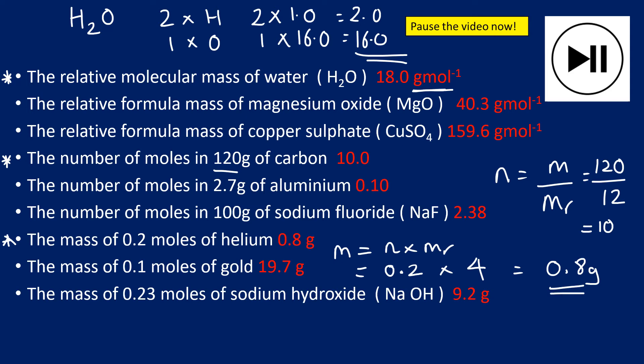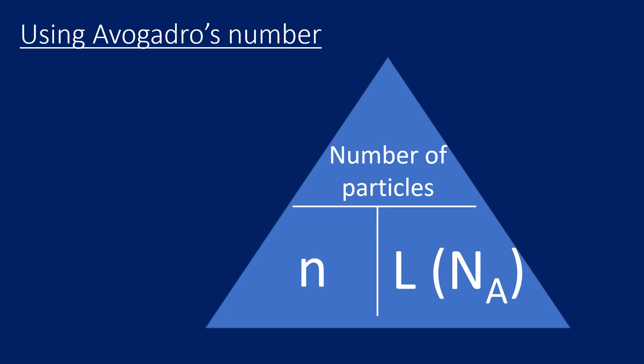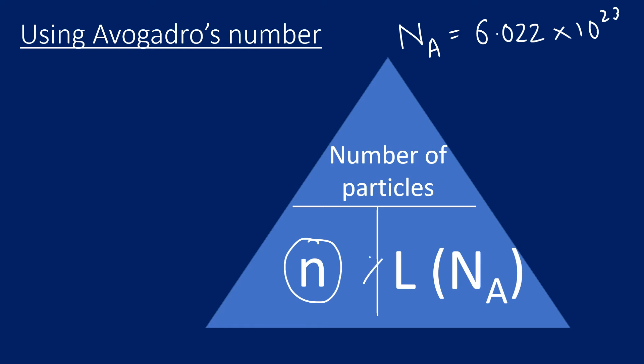Now we're going to look at how we can use Avogadro's number. You are given Avogadro's number in any question when required, and it is 6.022 × 10²³ — a very large number. If we know the number of moles N, we can multiply by Avogadro's constant to find the number of particles present. We can also rearrange this: if we have the number of particles and want the number of moles, we divide the number of particles by Avogadro's constant.